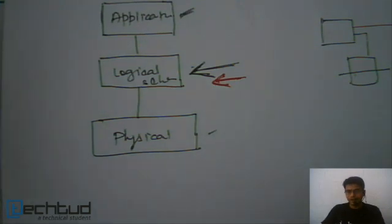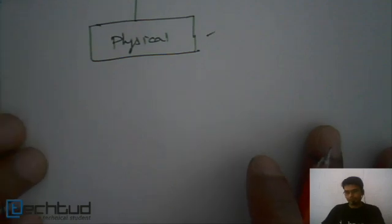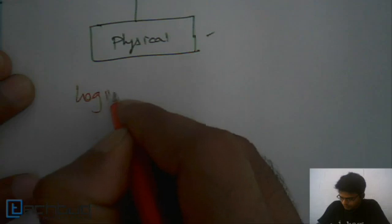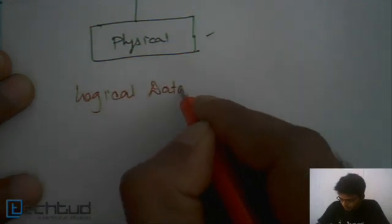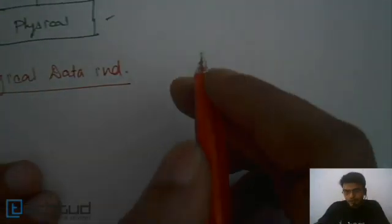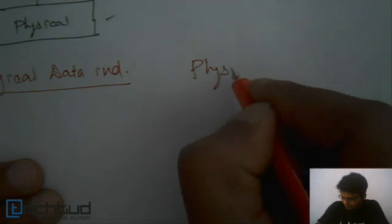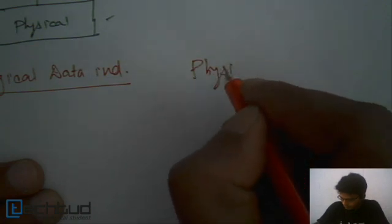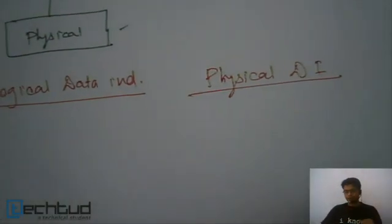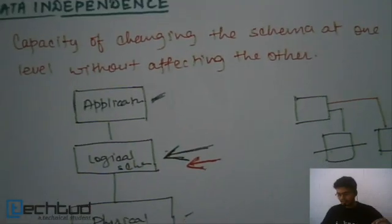The same kind of data independence is provided in our database system. We have two kinds of data independence: the first one is logical data independence and the other one is physical data independence.